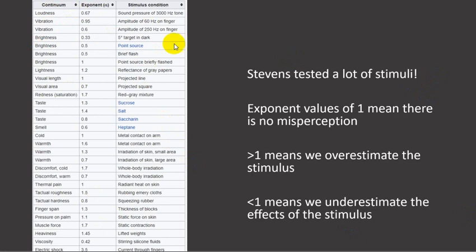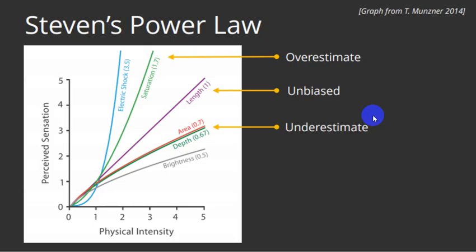So loudness, vibration. And this is all from Wikipedia. So you guys can check it out like thermal pain, radiant heat on skin. So this is the condition that he put people under. And this is, I don't know how he summarized it, basically. Everything from the amount of redness to warmth to thermal pain to muscle force, viscosity. It's really interesting stuff. Values of one mean there is no misperception in the amount of stimulus. Values greater than one mean we overestimate the effects of the stimulus. And values less than one means that we're underestimating the effects of the stimulus. So you can take a look at this chart.